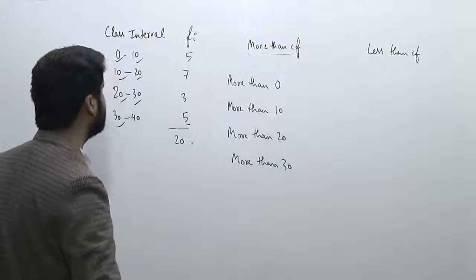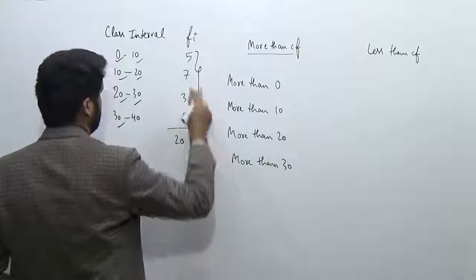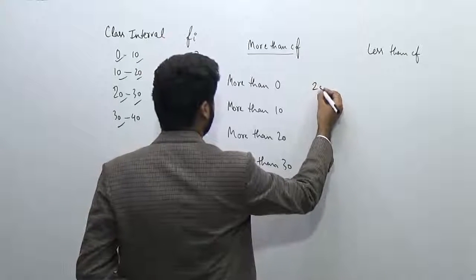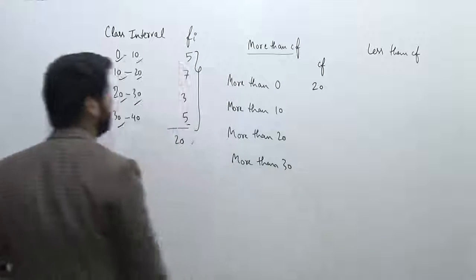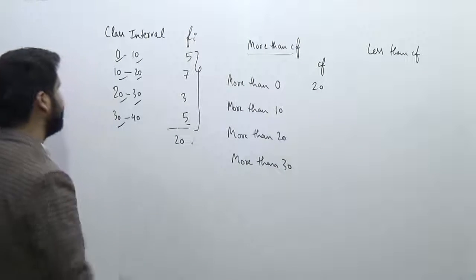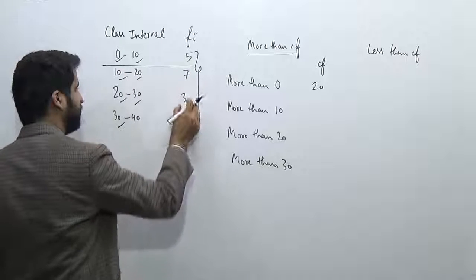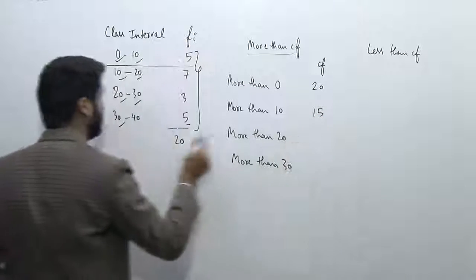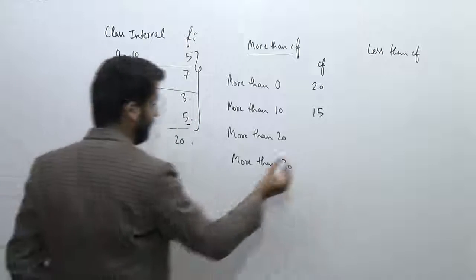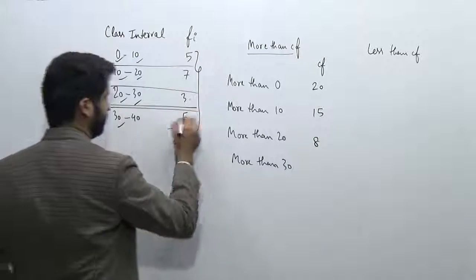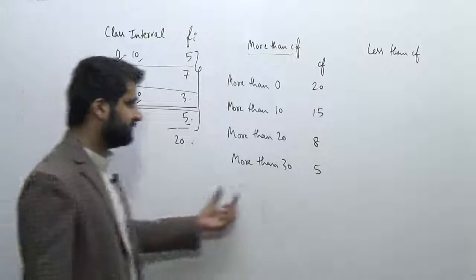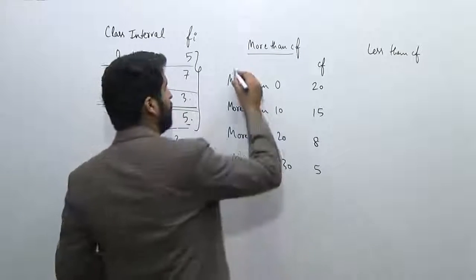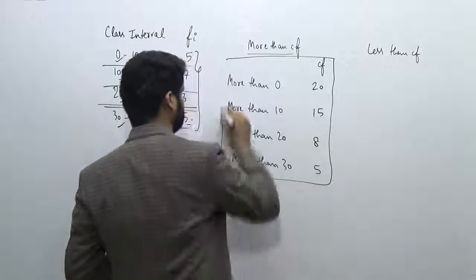Now I'll fill in the running sum of frequencies. More than 0 includes all frequencies, giving a total of 20. More than 10 gives 7 + 3 + 5 = 15. More than 20 gives 3 + 5 = 8. More than 30 gives just 5. And more than 40 gives 0. That's how we develop the more than cumulative frequency table.